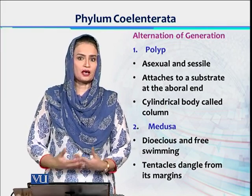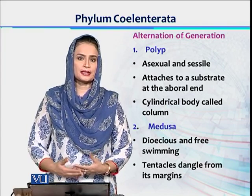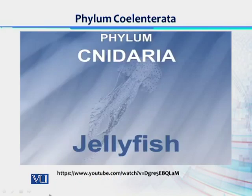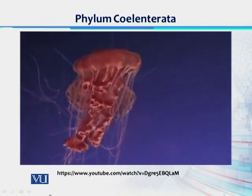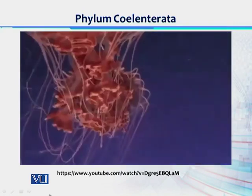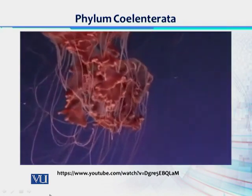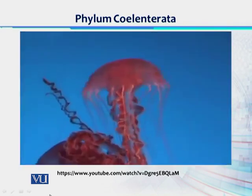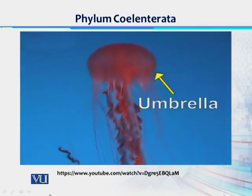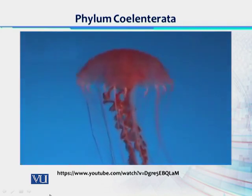To study how this alternation of generation functions in polyp and medusa, we will watch this video clip. Hi, I am Cristina and today I'll talk about jellyfish. Jellyfish are marvelous creatures with a gelatinous body. They are easy to recognize — they have a convex portion called an umbrella with numerous tentacles hanging from its margin.